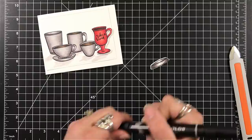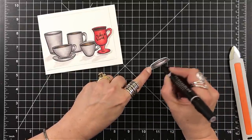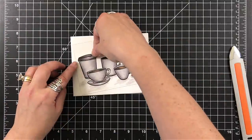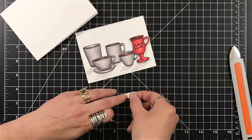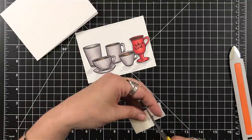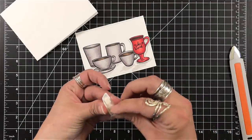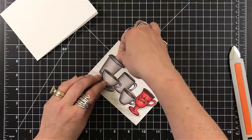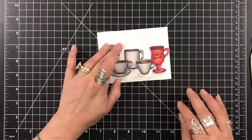I wanted to darken up the lid to the takeout coffee cup. So I'm just using one of the darker shades, the darkest shade that I used before, and I will be popping that up with some foam squares. And then I also popped up the fancy mug with some foam squares as well. So I have some dimension on my card.